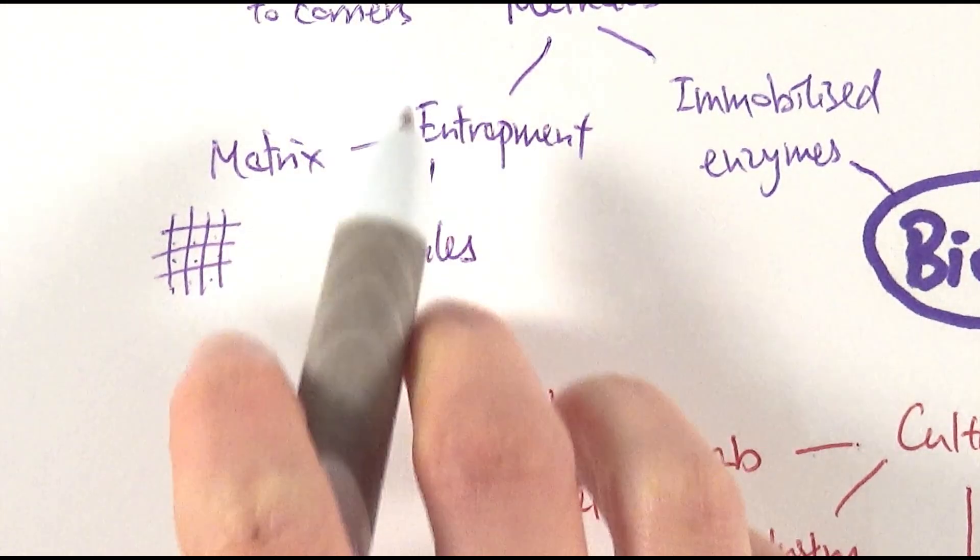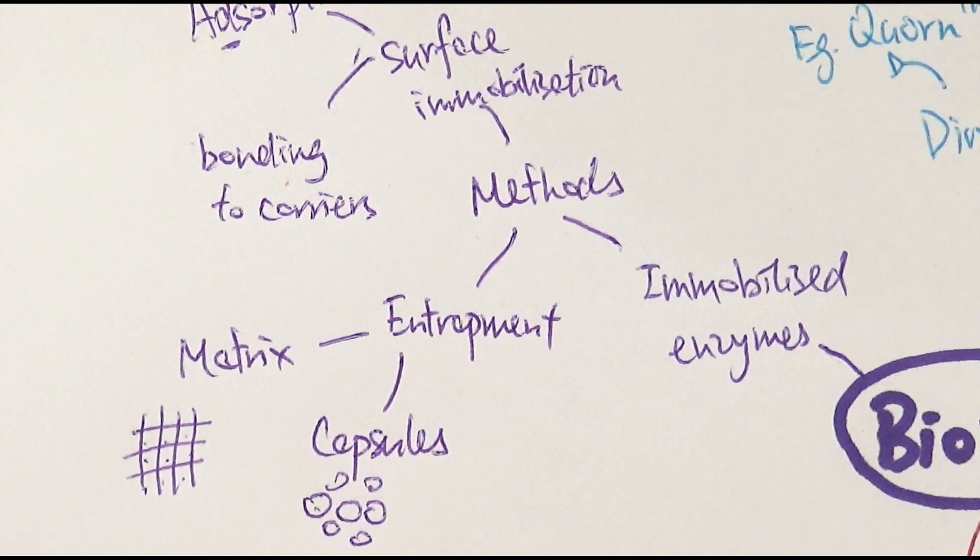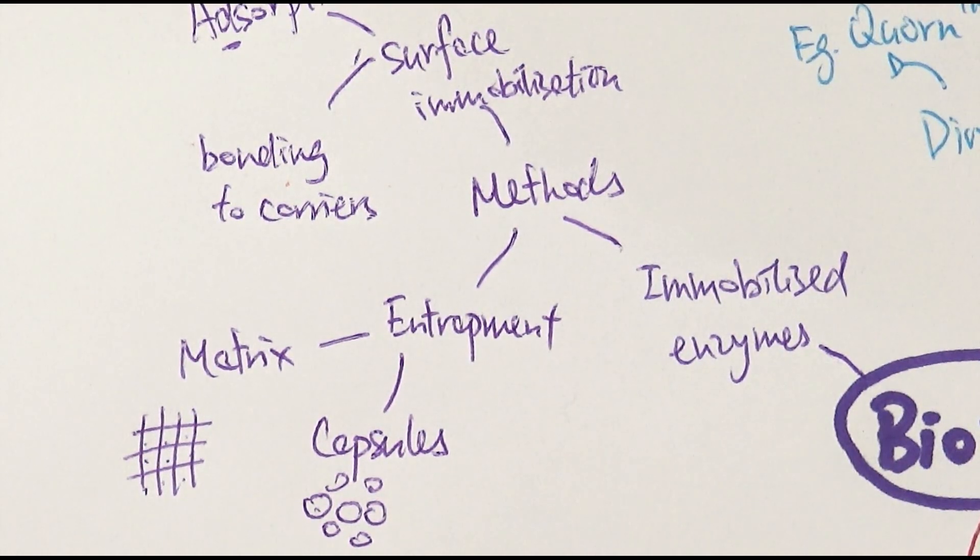In comparison to surface immobilization, it's probably more stable because it's more protected inside certain things. So you can pretty much be guaranteed you're not going to lose any enzymes. However, the material to make them is a bit more expensive. And also the efficiency is not as high because the substrates have to diffuse into the matrix, into the capsules or into the jelly that makes them.